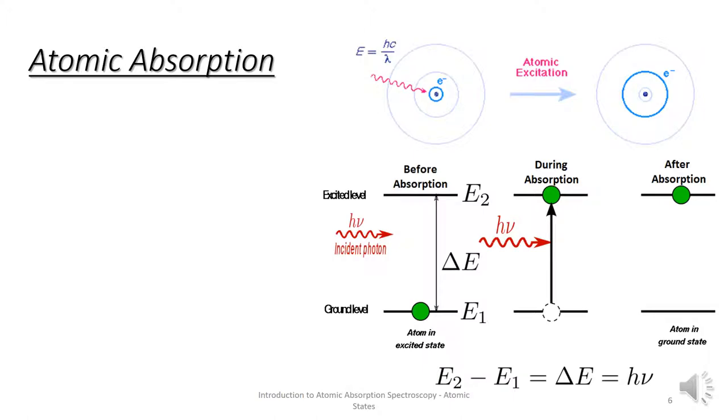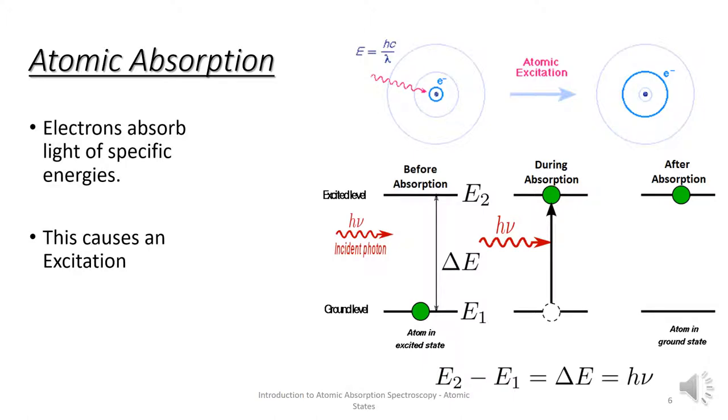As we mentioned previously, electrons absorb light of specific energies. This causes an excitation and the excited electron jumps to a higher energy level.